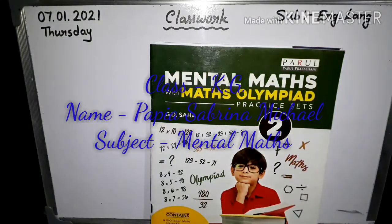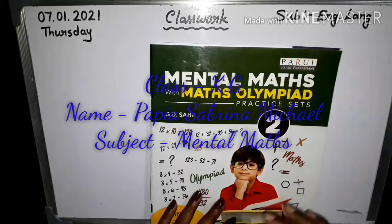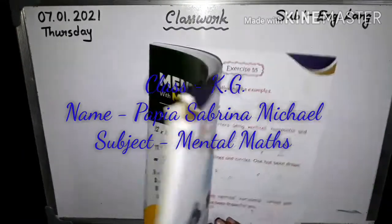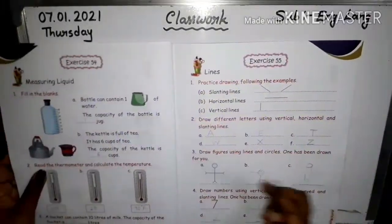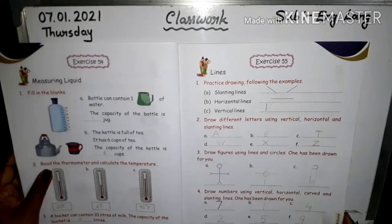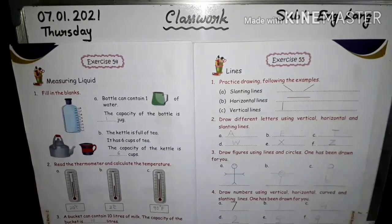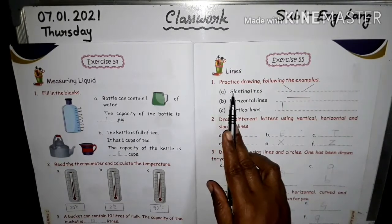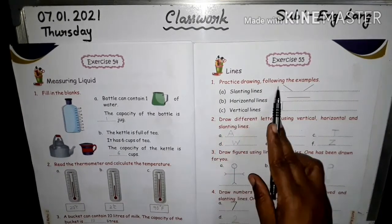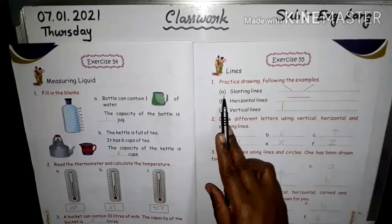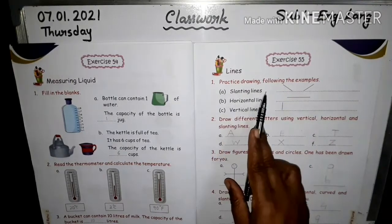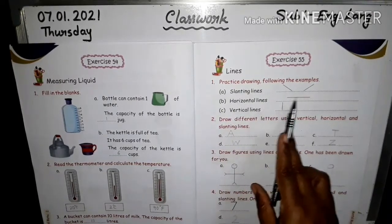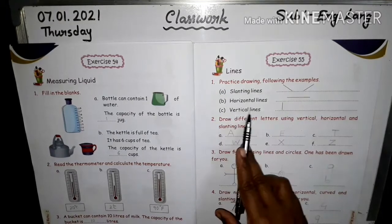Mental Maths Mass Olympiad, exercise 55, page 59 — take out this page. Question 1: practice drawing following the examples. A: slanting lines. B: horizontal lines. See the picture on the right side — vertical lines.